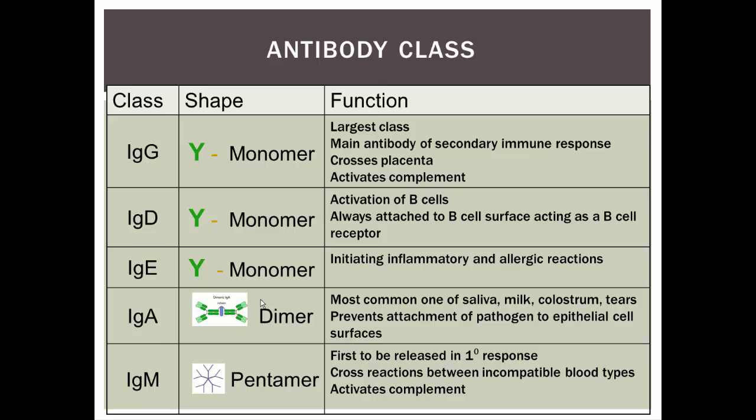IgM is the last class. IgM has a pentamer shape — five Y-shapes stuck together at the base. This is the one released during the primary immune response. We can measure the amount of IgM in circulation to help diagnose if a person's sick due to a first exposure to some pathogen — a high number of IgM antibodies indicates primary exposure. IgM is also responsible for cross-reactions with incompatible blood types; recall that agglutination slide showing a pentagon-shaped antibody. IgM can also activate complement, just like IgG.